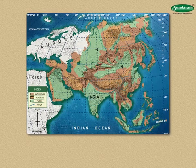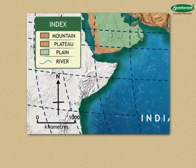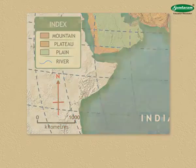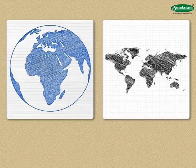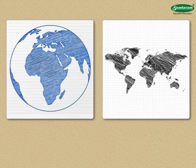On a map, we show information about the earth or its specific regions with the help of conventional symbols, color, distance and direction. You must have often wondered how the whole earth or its parts can be shown on a small piece of paper. This is possible because of the scale of a map.